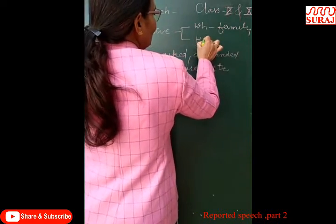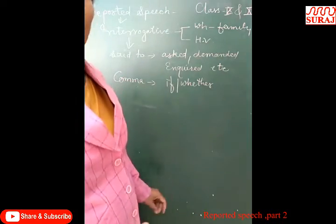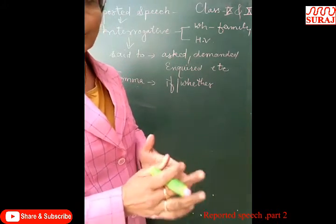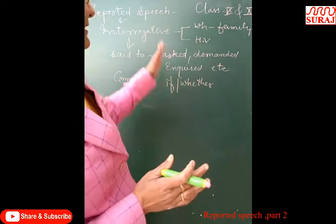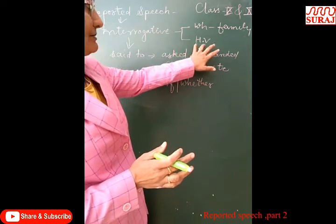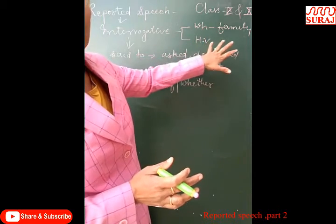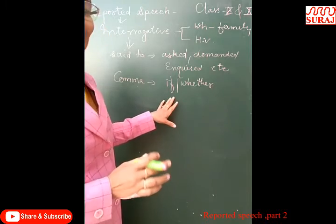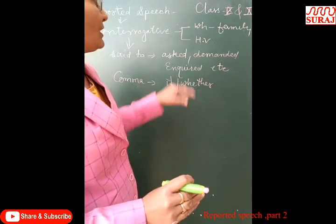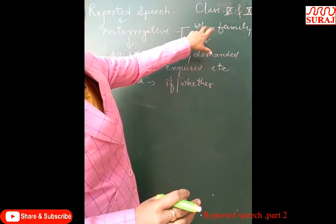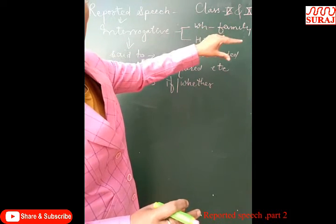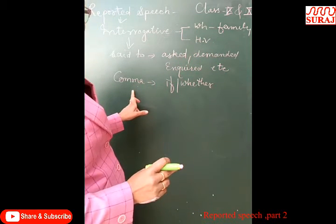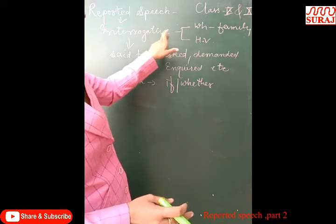Interrogative sentences start in two ways: either with a WH question word (WH family), or with a helping verb — auxiliary verbs such as is, am, are, was, were, can, could, may, might, shall, should, do, does, or did. If the interrogative sentence starts with a WH family word, then no conjunction is used; the WH word already present in the direct speech is used in place of the comma.